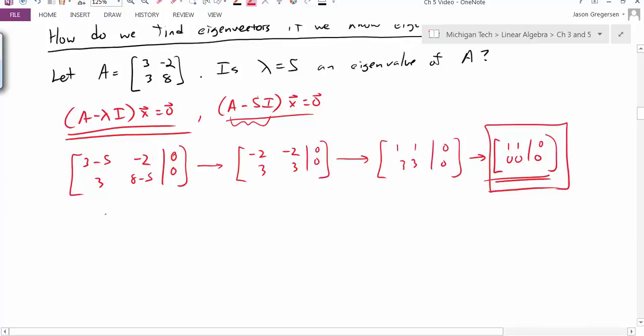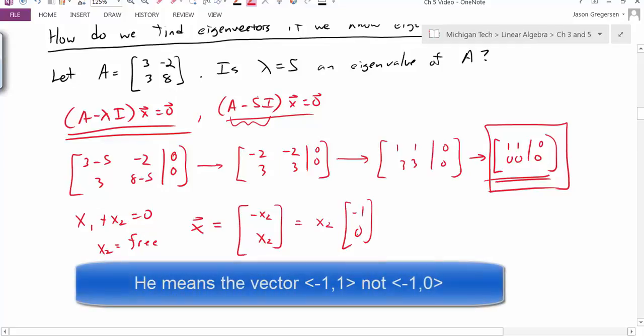That last form tells me that I have the equation x1 plus x2 equals zero, and that x2 is a free variable. That means my eigenvector, the solutions of this homogeneous equation, would look like [-x2, x2] for any value of x2. And if I factor out my value of x2, I can write it like this.